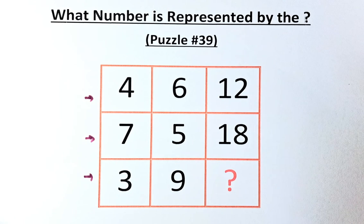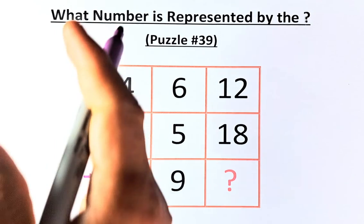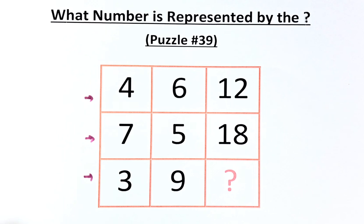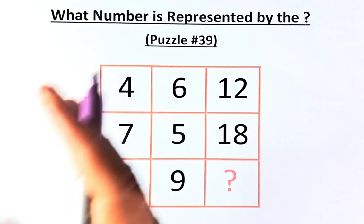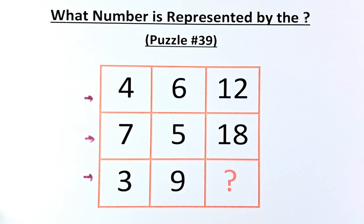So 4, 6 equal to 12, 7, 5 equal to 18, and 3, 9 equal to question mark. How do you do that? The trick is that in the first column, every number in the first column, you are going to minus by 1. And every number in the second column, you are going to minus by 2.